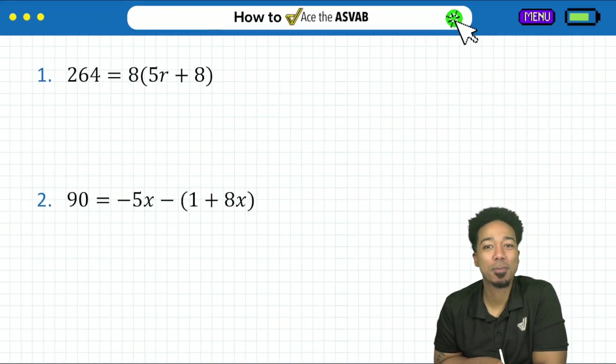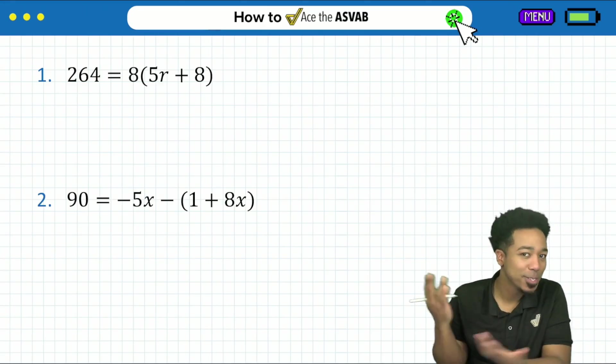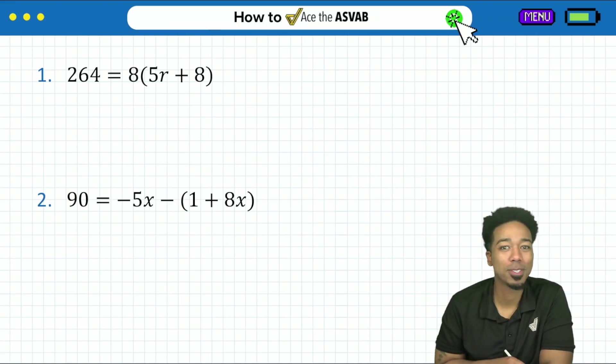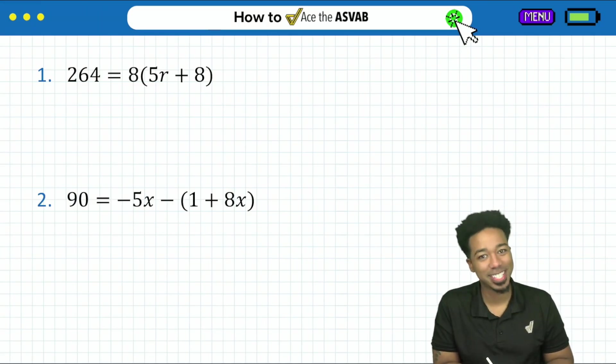What's going on, my ASVAB party people? Coach Anderson here, and if you're looking at that scary stuff right there, solving equations - yeah, we have some parentheses going on, we have variables on both sides - but you're watching this video because you trust me to help you out. So let's get to work.